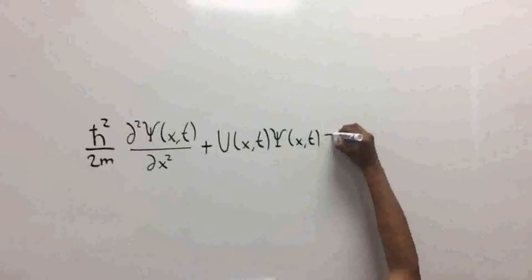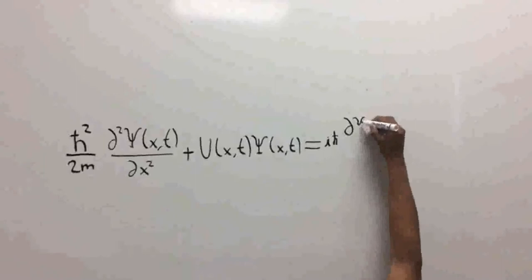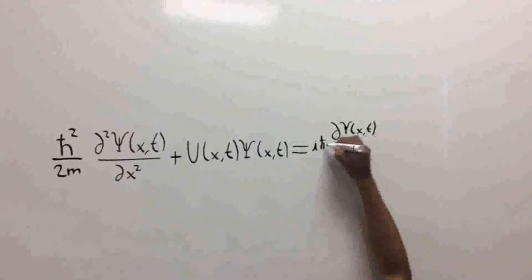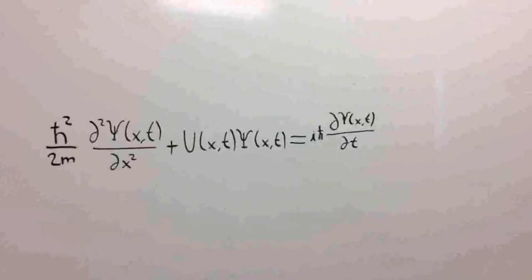First, we start with the most known Schrodinger equation, h-bar squared divided by 2m multiplied by the double derivative of the wave function with respect to space plus the potential function multiplied by the wave function equals i h-bar multiplied by the partial derivative of the wave function with respect to time.